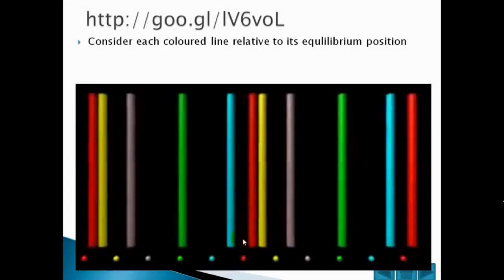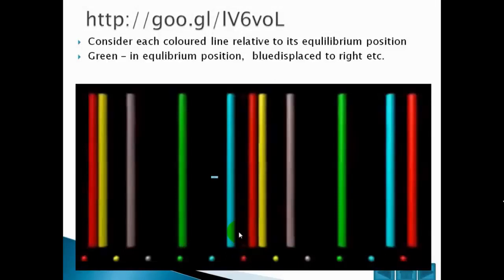For example, the green line is very close to the equilibrium position. The blue line is displaced far to the right. The red line is also displaced to the right. The yellow line is displaced to the left. The lilac line is also displaced to the left. Notice that there is an area of high density by the red and yellow because the lines have moved towards that point. Also notice that where we have an area of low density or rarefaction, which is by the green, the lines have moved away from that area.